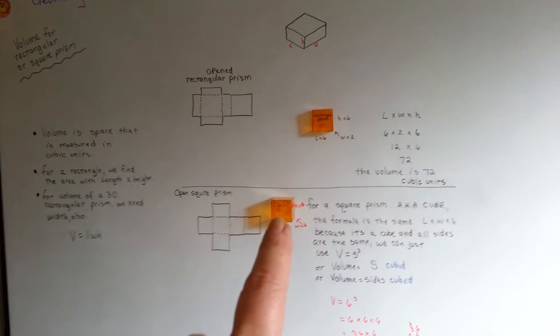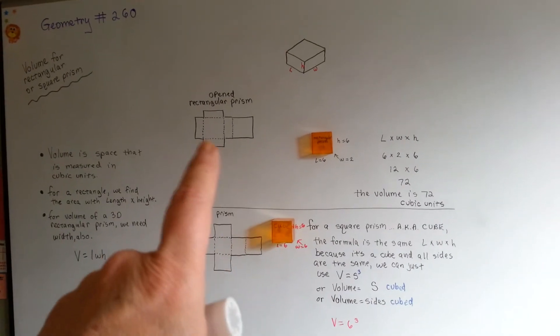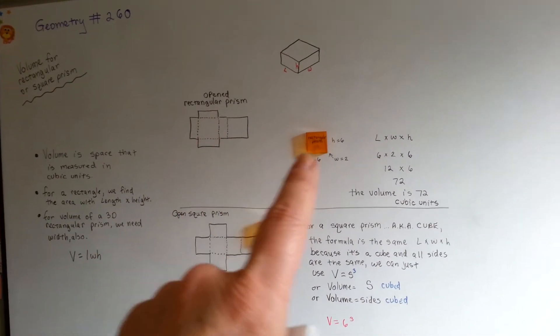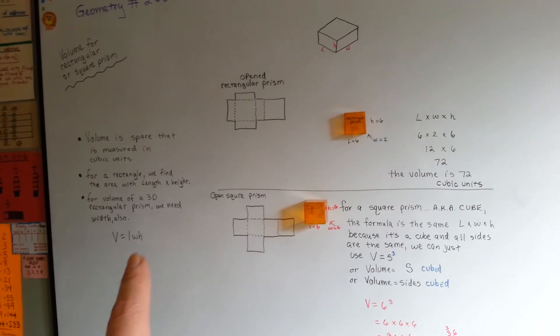Volume for the cube is V equals S cubed, and for a rectangular prism, it's just LWH. V equals LWH, like over here.